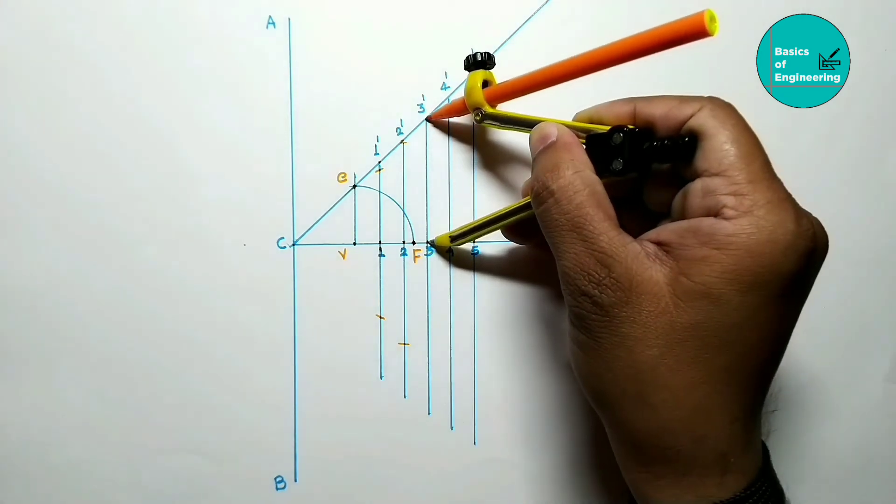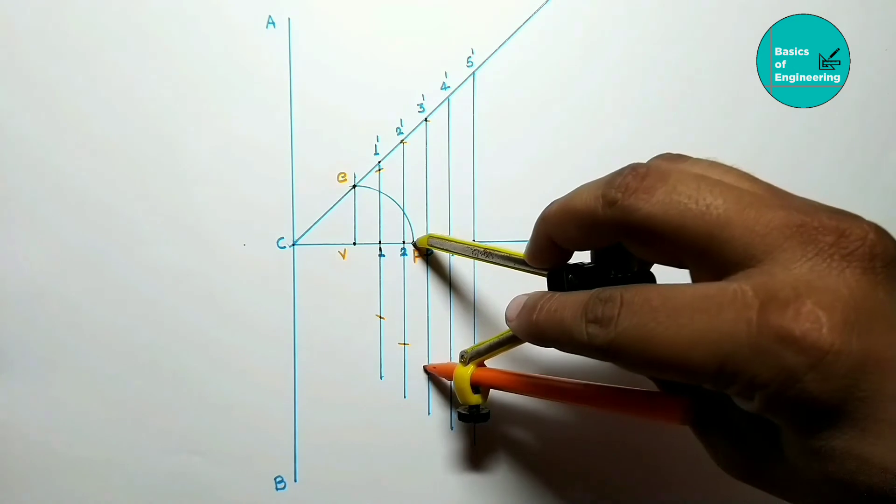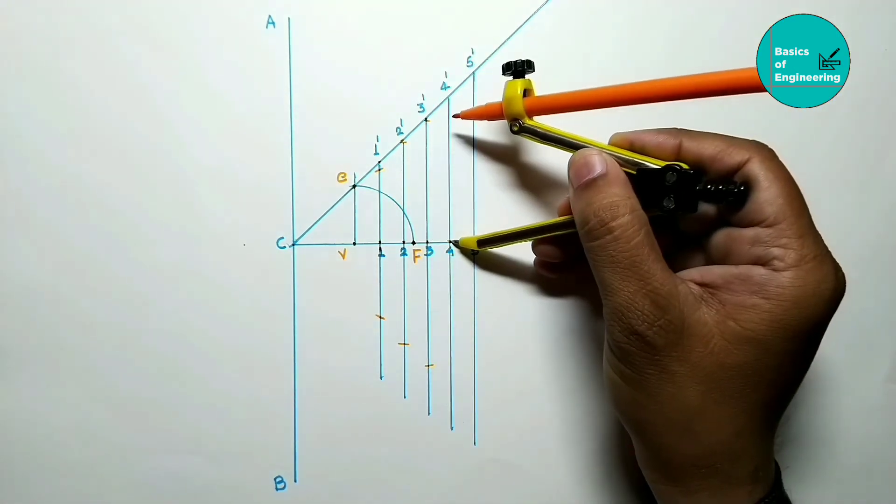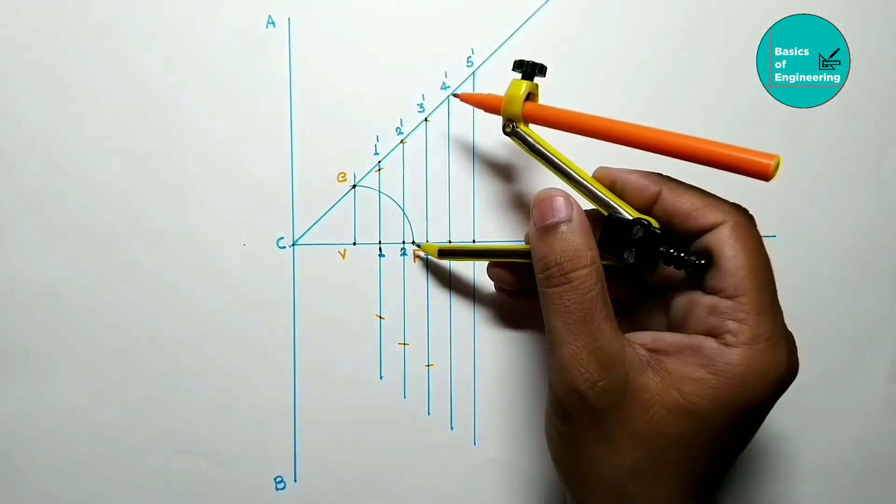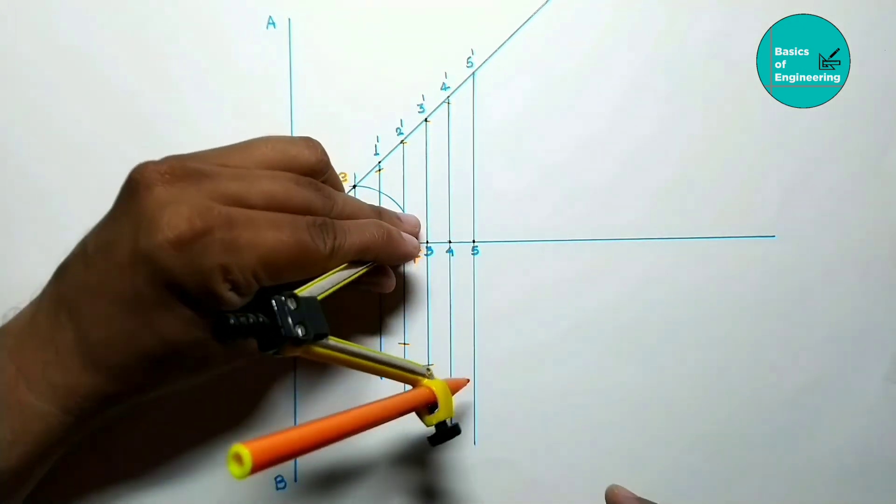3 to 3 dash, F as center, one arc on upside, one on downside. 4 to 4 dash, F as center, one arc on upside, one arc on downside.